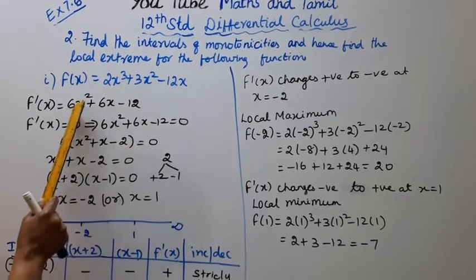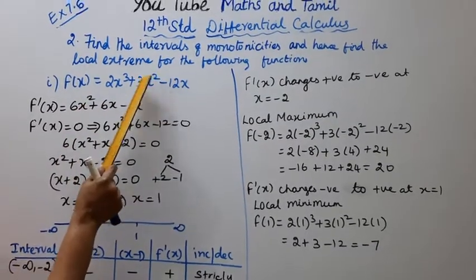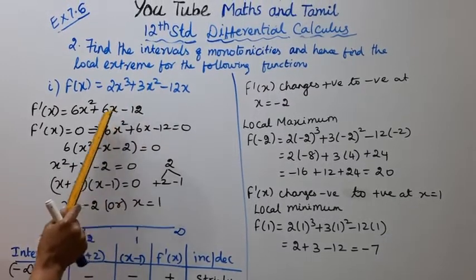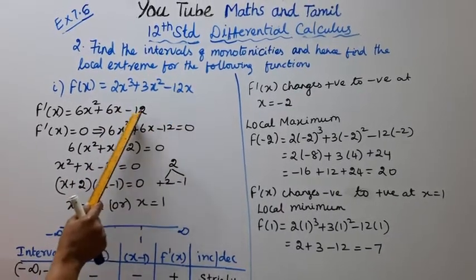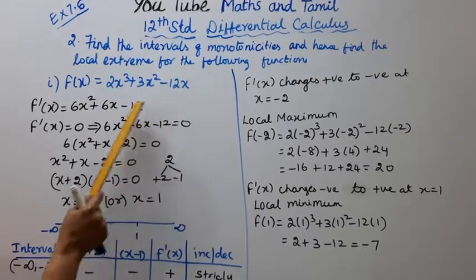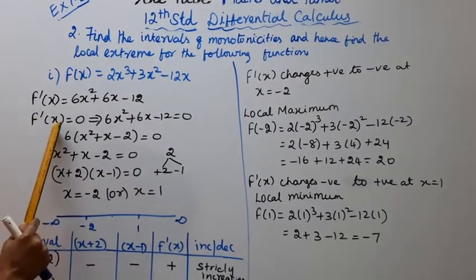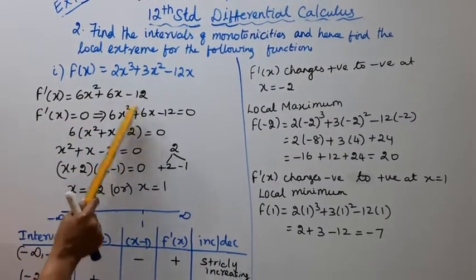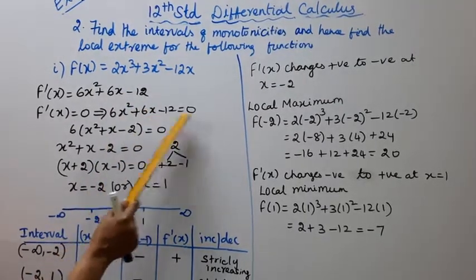2, 3, 6, 1 power x. 12x differentiate minus 12. f dash of x equal to 0. 6x square plus 6x minus 12 equal to 0.